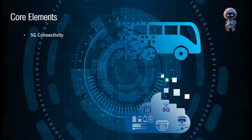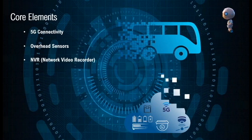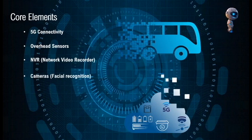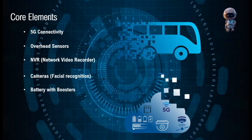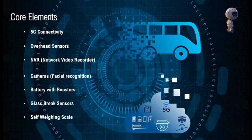Core elements: 5G connectivity — individual buses are armed with high-speed internet connection. Overhead sensors — individual seat sensors identify each student's occupancy. NVRs — network video recorder cameras in the bus are connected to cloud storage to record movements. Cameras with facial recognition monitor entry and exit of students, driver behavior, and traffic. Battery with boosters — all devices are connected to a high-powered battery with specially designed boosters to monitor capacity. Glass break sensors — all window glasses are connected to a breaker loop to detect unusual activities. Self-weighing scale — digital scales push the weight of the bus at the closing time of each journey.